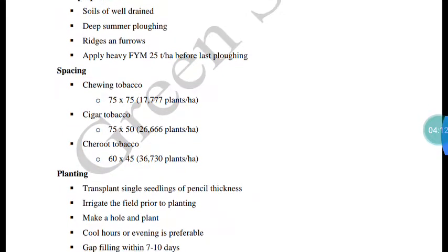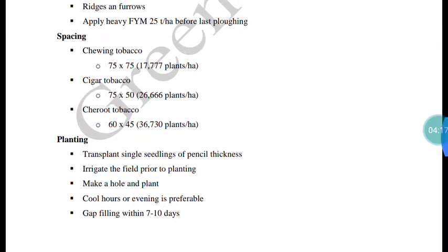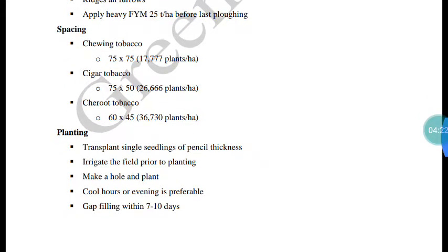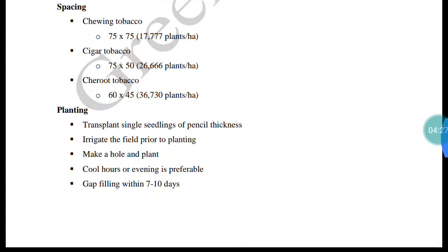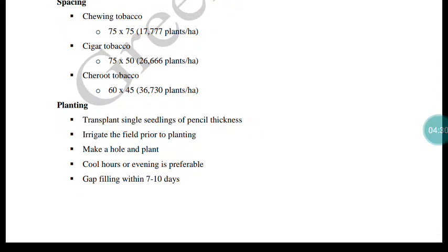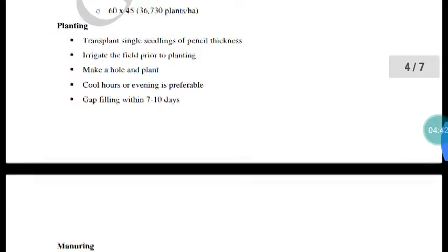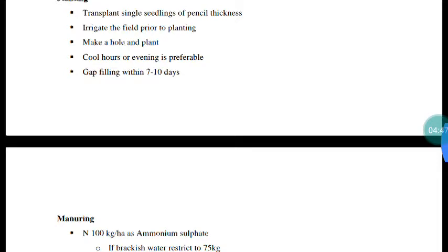Well-drained soil is essential to avoid waterlogging. Spacing for tobacco is different from other agriculture crops: while other crops use 12.5 x 10 cm per hectare, tobacco uses 20 x 10 cm per hectare. Spacing varies depending on the type of tobacco.